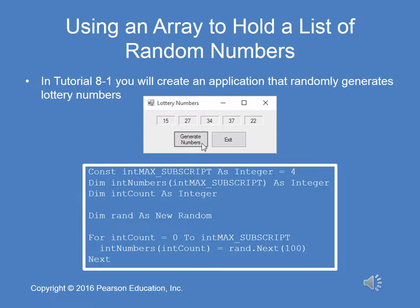In Tutorial 8-1, we create an application that randomly generates lottery numbers that are stored in an array. I'm going to post a video of 8-1 running with brief explanations of what's happening within the code. Here's a block of code — it's the event handler for the generate numbers button. We declare a constant integer called int max subscript and we assign the value of 4 to it.